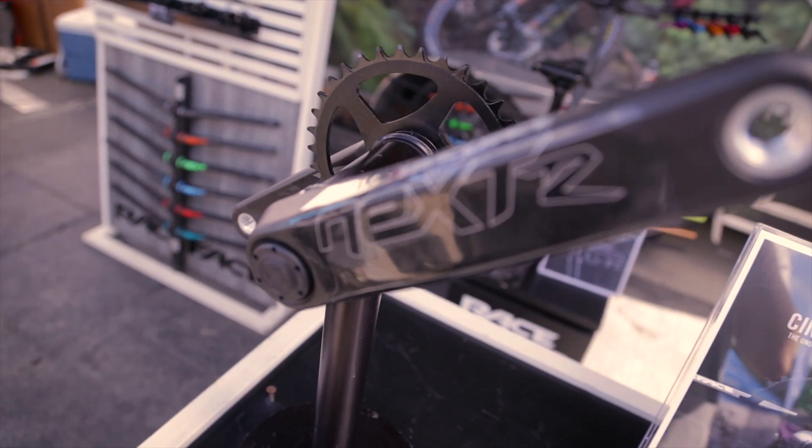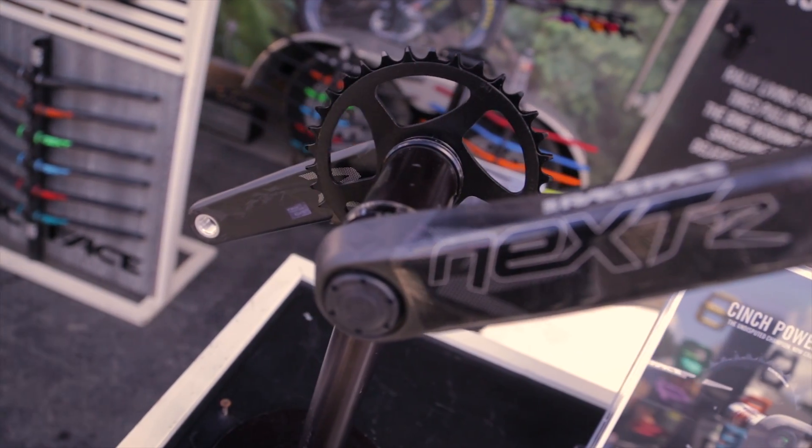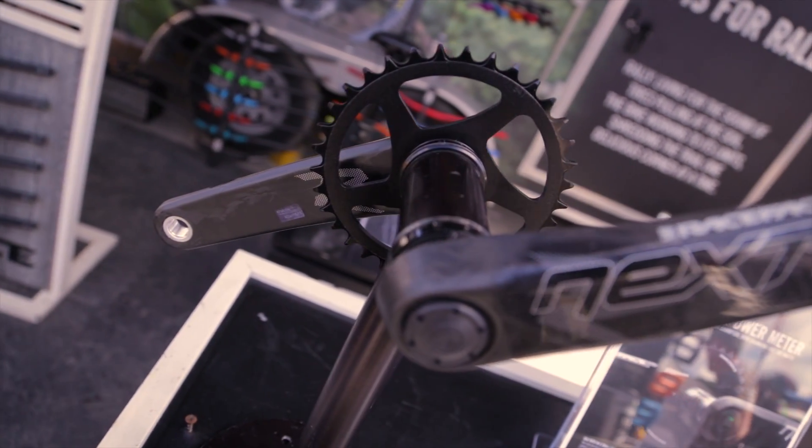Basically what we're doing is measuring the amount of force a rider is putting through their crank arm. Within the Stages power meter, we have two basic devices.